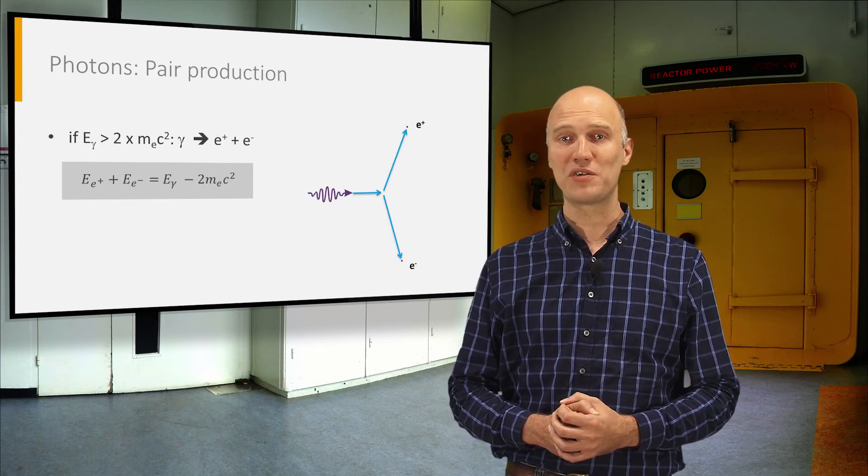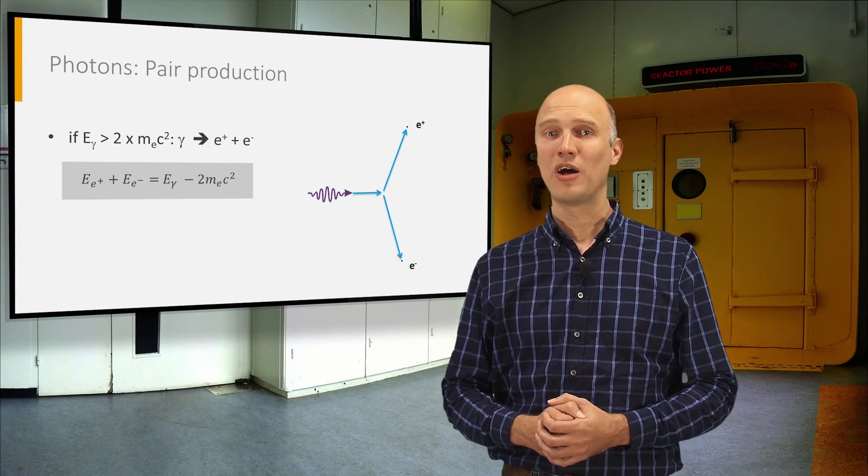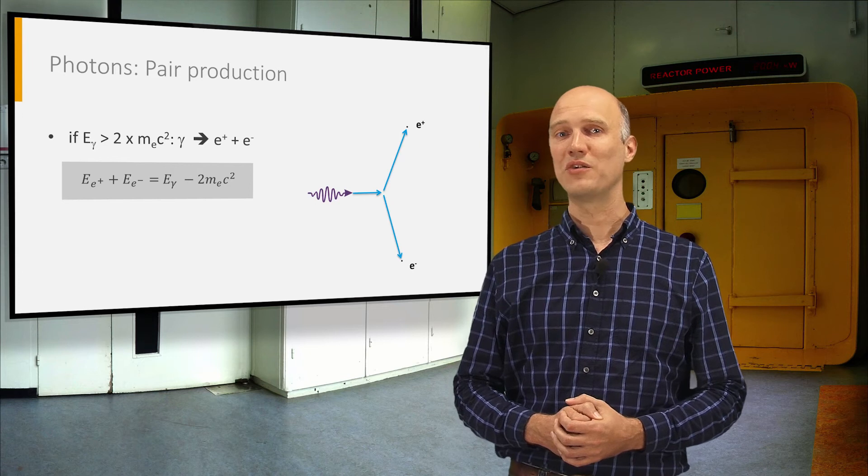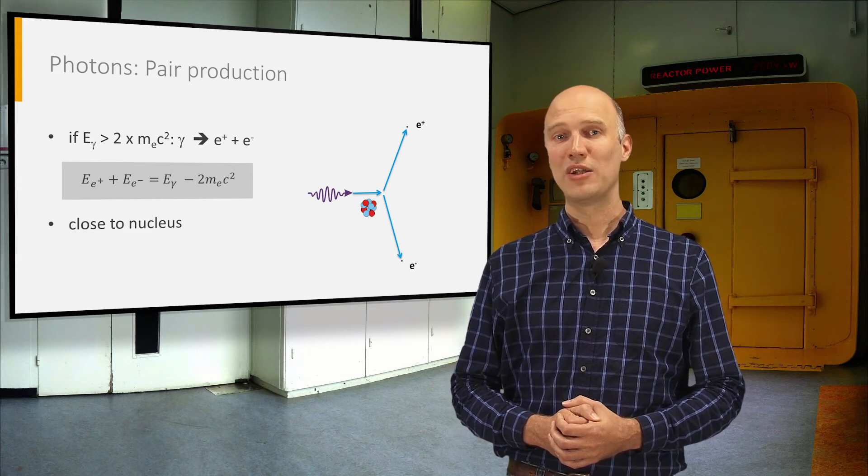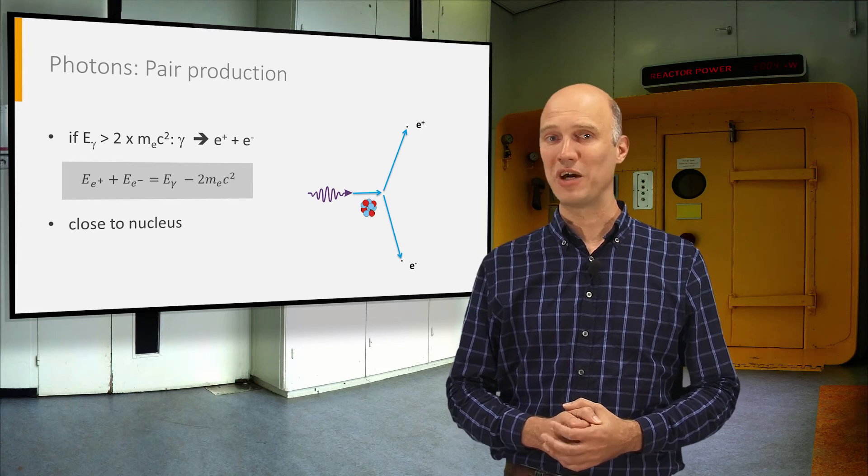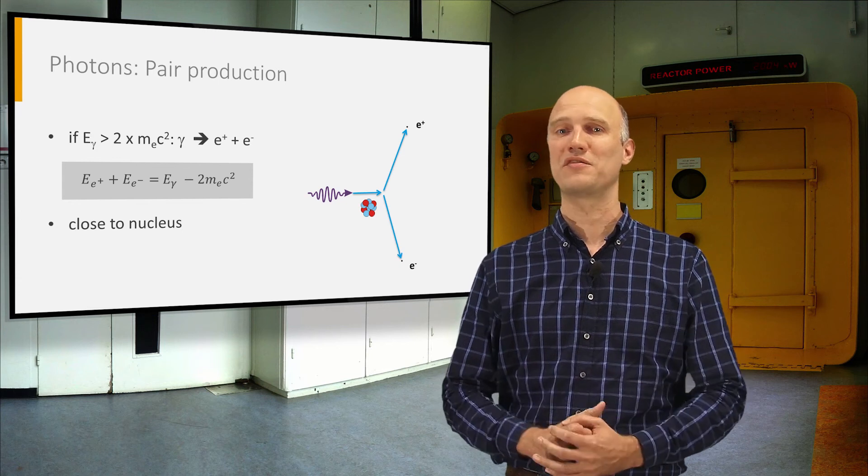During pair production, a photon with sufficient energy will produce an electron-positron pair according to Einstein's well-known equation E equals mc squared. In order to conserve energy and momentum, this can only occur in the electromagnetic field of an atomic nucleus.